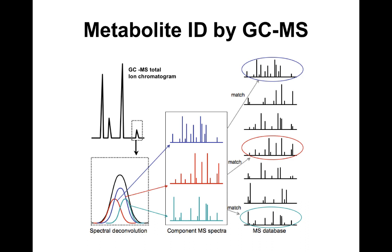The MS spectra will be electron ionization spectra with many fragments. A small chromatographic peak might contain three compounds, each with its own spectrum. For metabolite identification, you compare those reference spectra from your library to the spectra obtained from those peaks. You can visually see that the top spectrum matches the first reference compound, the red one matches the middle reference, and the green one matches the seventh — identifying them by spectral matching.